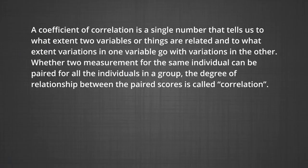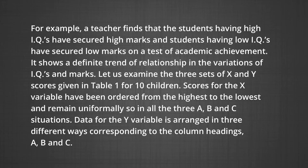This is known as the coefficient of correlation. The coefficient of correlation is defined as a single number that tells us to what extent two variables are related and to what extent variations in one variable go with the variations in the other. Whether two measurements for the same individual can be paired for all individuals in a group, the degree of relationship between the paired scores is called correlation. For example, a teacher finds that students with high IQs have secured high marks, and students with low IQs have secured low academic achievement.